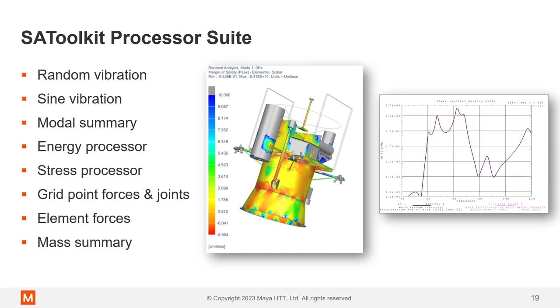Now, I'm talking a lot about the Random Vibration Toolkit, and I'll continue to do so because that is really where the key benefits and speed are. But there's lots of other useful tools and features in this toolkit as well. Sine vibration, the modal summary. We have an energy processor, stress, grid point forces and joints, element forces, mass summary. Lots of useful tools that you'll find to be able to implement into your workflow as you see fit.